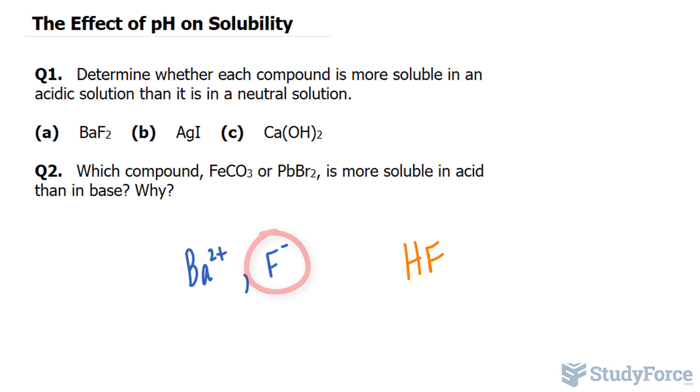Let's move on to part B. This time we have silver iodide. The solubility of silver iodide is not greater in an acidic solution, unlike in question A. That's because iodide, if this dissociates, is not a base like fluorine was in the previous question.